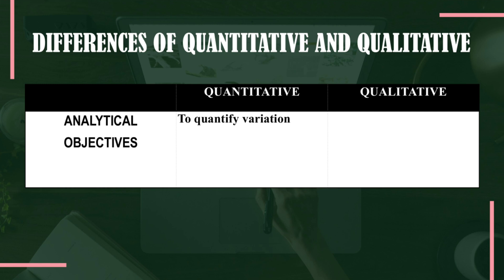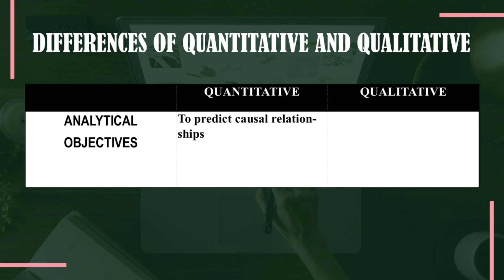The next aspect is analytical objectives. Quantitative research quantifies or measures variation, whereas qualitative research describes variation. Additionally, quantitative research predicts causal relationships — studying cause and effect in experimental research and correlations of variables in descriptive correlational research. In qualitative research, the relationships are described and explained.